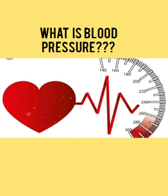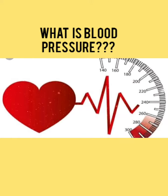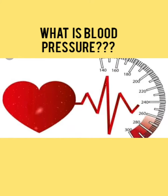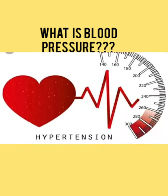120 refers to the systolic pressure — that is the brachial artery pressure during cardiac ventricular contraction. And 80 refers to the diastolic pressure, that is brachial artery pressure during cardiac ventricular relaxation. The average of 120 by 80 is about 100.